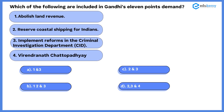Moving forward to the next question: which of the following are included in Gandhi's 11-point demand? The given statements are: 1) abolish land revenue, 2) reserve coastal shippings for Indians, 3) implement reforms in the Criminal Investigation Department (CID), and 4) abolish the Postal Reservation Bill. The given options are: A) 1 and 3, B) 1, 2 and 3, C) 2 and 3, and D) 2, 3 and 4.